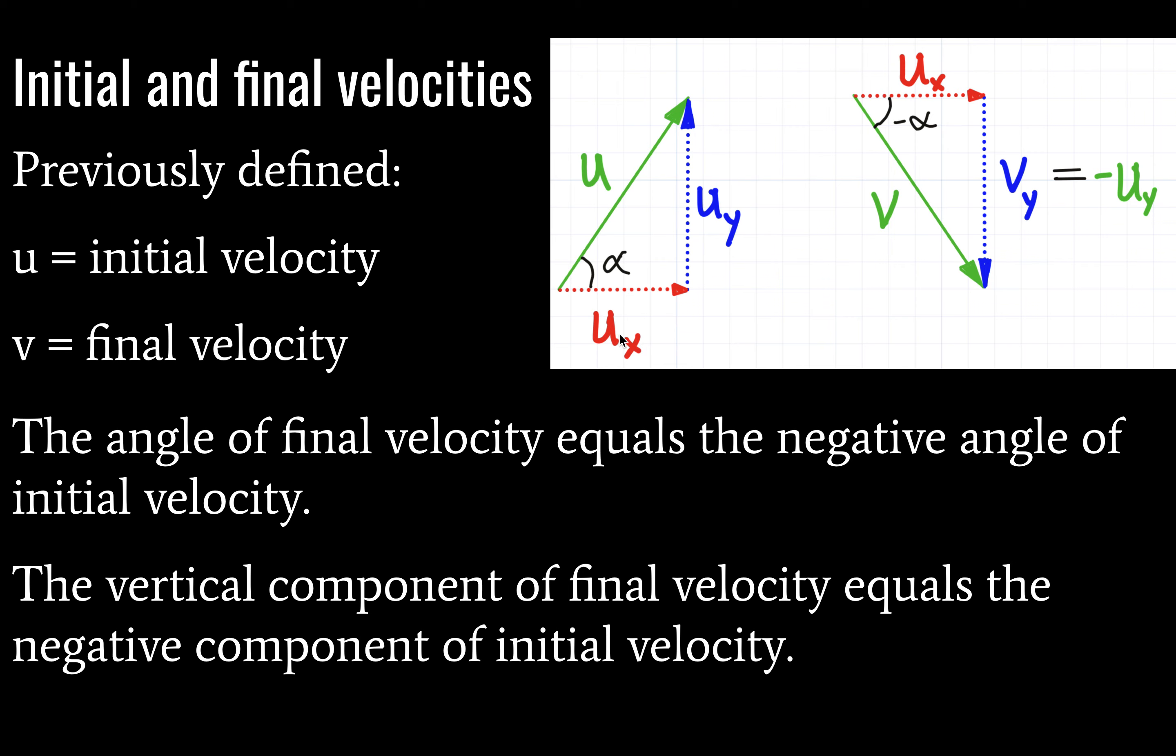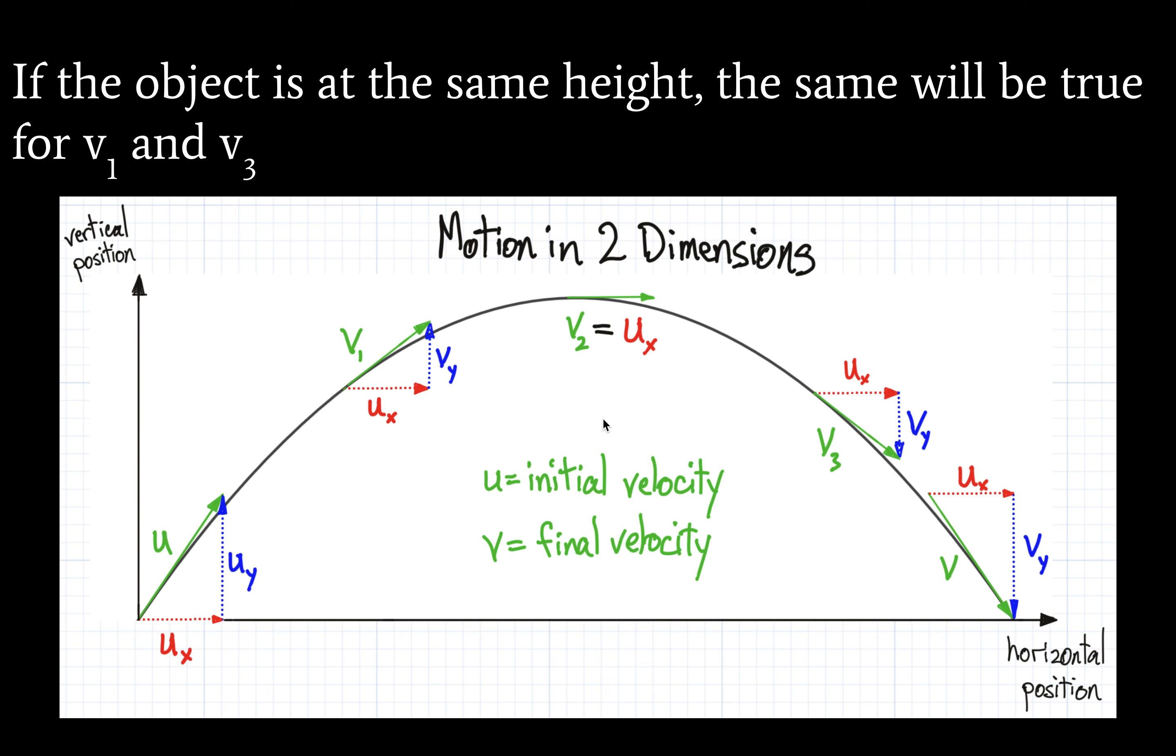The horizontal component, again, is the same. So if our object is at the same height, and I hope I have very thoroughly nailed this down, the same is going to be true for V sub one and V sub three. So if we imagine that my object here is at a height of, say, I don't know, H, and over here it is also at a height of, say, H, then this angle and this angle will effectively be equal to each other.